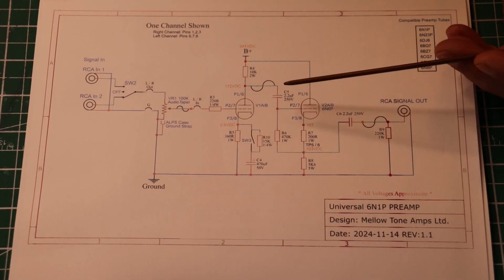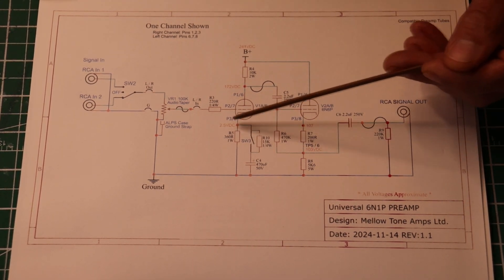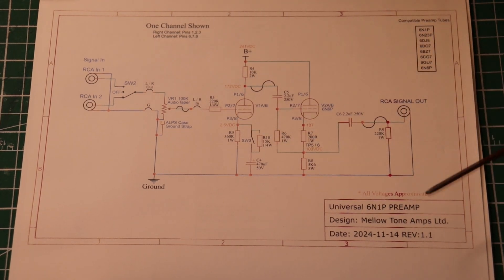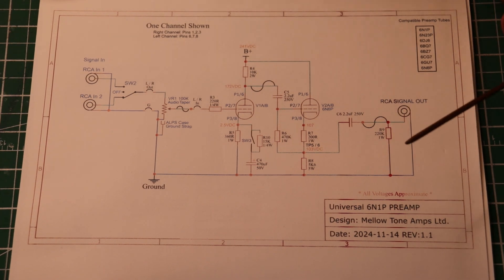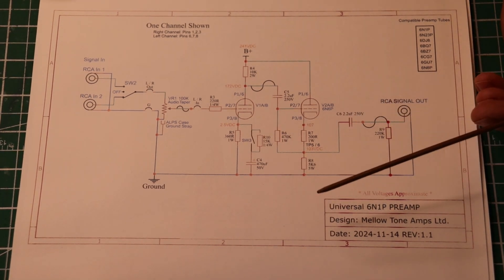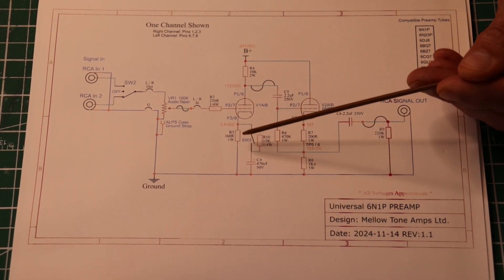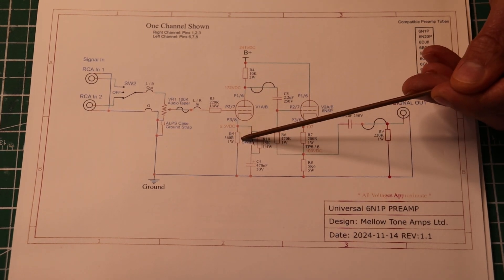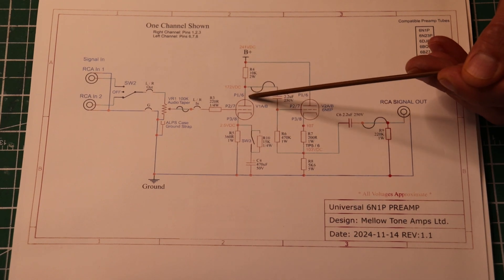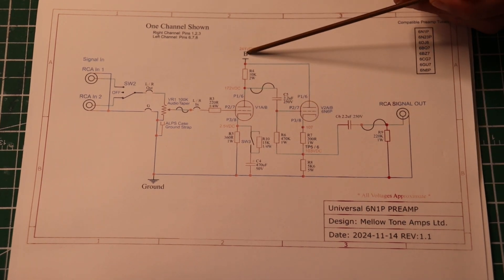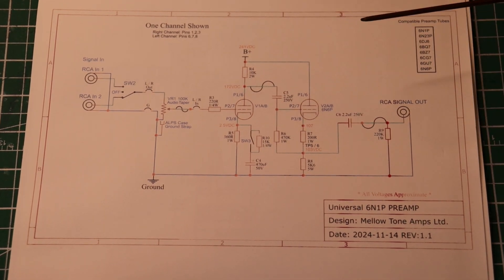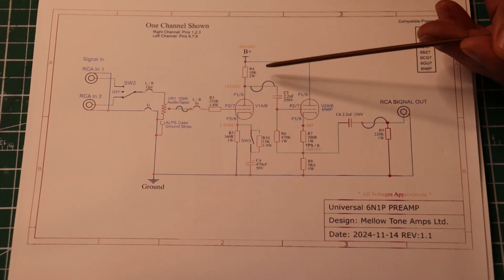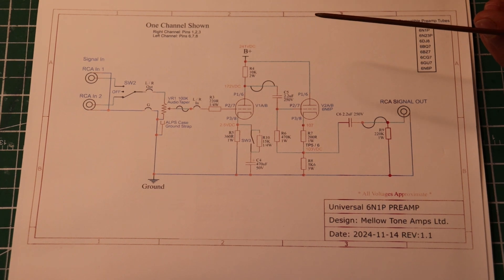This is a very standard gain stage, so the cathode of the tube is biasing it up. It's a cathode bias tube, sometimes called an auto bias. R5 down here, 360R 1W, that sets the operating point of this tube in conjunction with the voltage that's applied here and of course the actual impedance of the tube and its design.